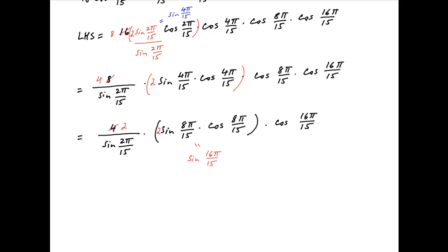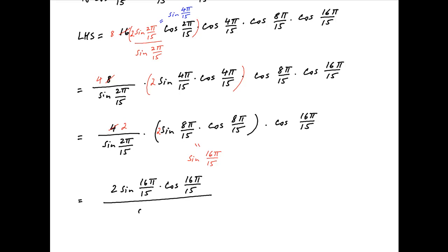Therefore the left hand side is equal to 2 times sin of 16π upon 15 times cos of 16π upon 15 in the numerator, and in the denominator we have sin of 2π upon 15. Applying the double-angle identity gives sin of 32π upon 15 in the numerator.